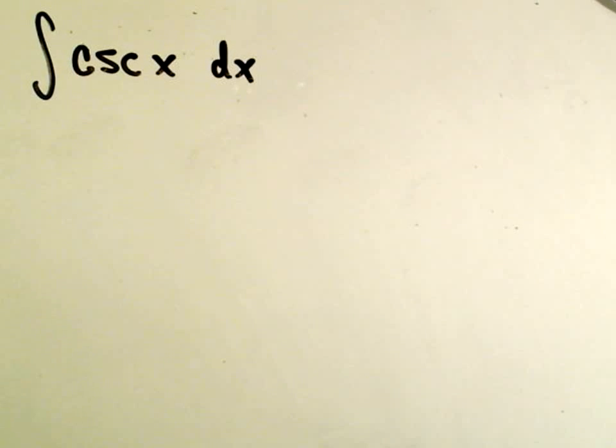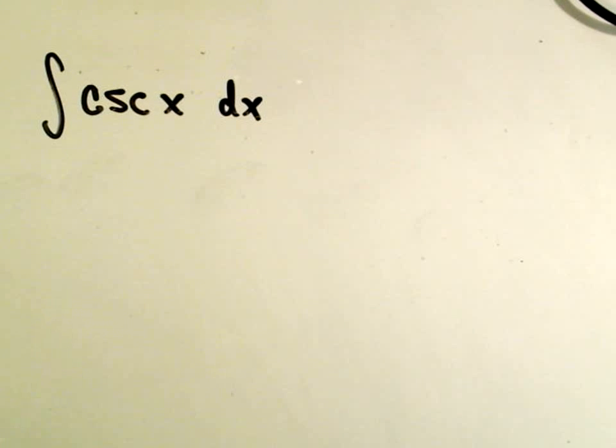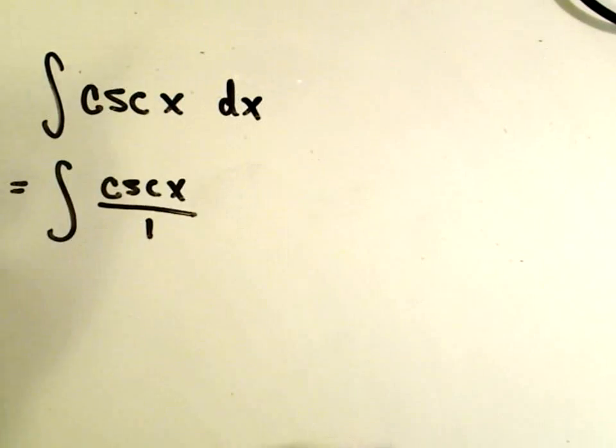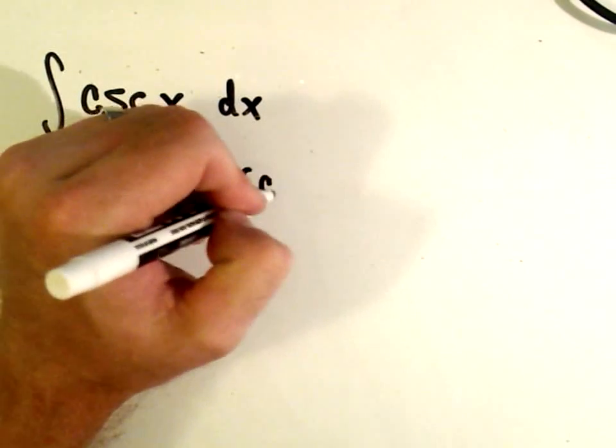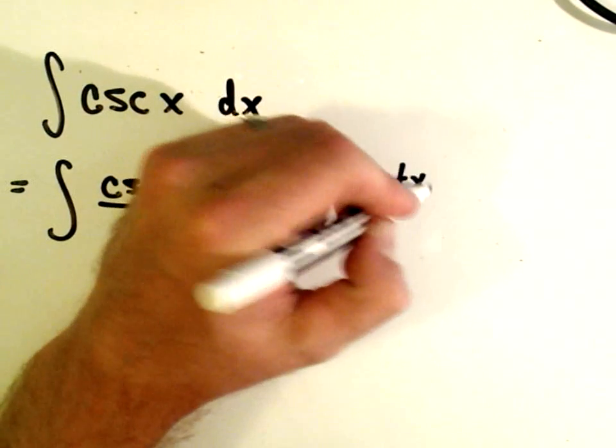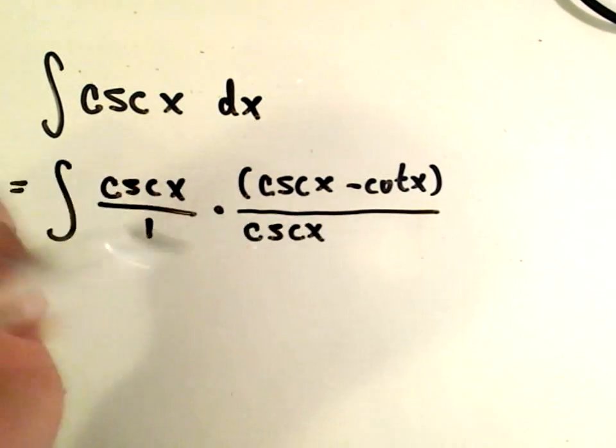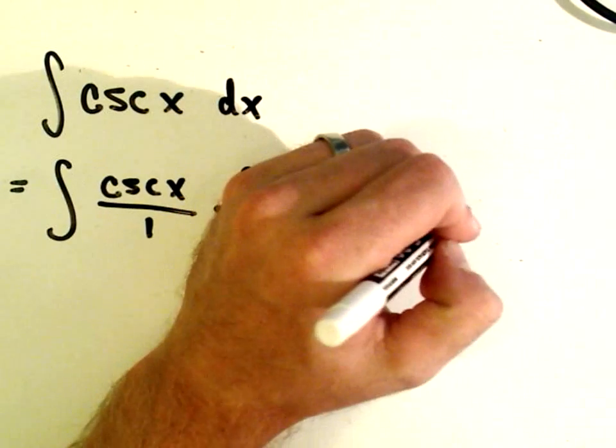The next one I want to try to integrate here is just plain old csc x. A lot of times if there's powers of cosecant and cotangent, you can do that problem the same way as when you do secants and tangents. But here we just have cosecants by itself. So what we're going to have to do in this case is basically do some algebra. And this first step, what I'm going to do is I'm going to write csc x as csc x over 1. And actually, what I'm going to multiply the top by is csc x - cot x. Well, if I do it to the top, I'm going to have to do it to the bottom as well. So csc x - cot x dx.